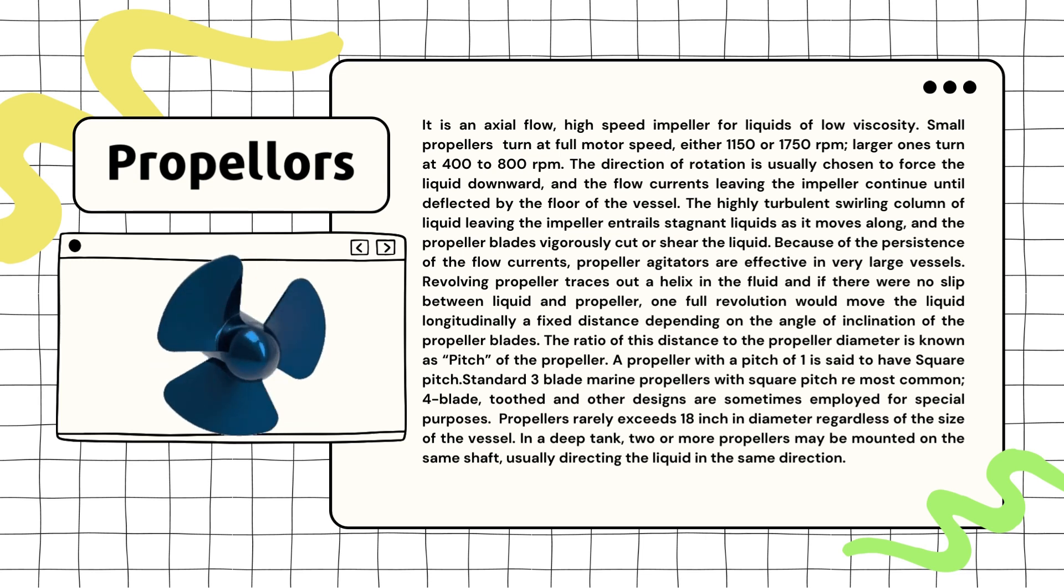In simple terms, propeller agitators are like spinning blades that mix liquid in big containers by creating swirling currents that move the liquid around and chop it up. They work very well for large containers, and the design of the blades can vary depending on what you're trying to accomplish.